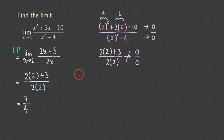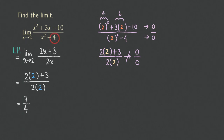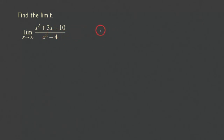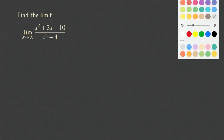Now I want to talk about another problem that looks very similar but is actually different. I make just one change on this limit problem, making it an entirely different problem, and we'll still use L'Hôpital's rule. The function is the same — x squared plus 3x minus 10 over x squared minus 4 — except this time x is not approaching 2 anymore; it's approaching infinity.